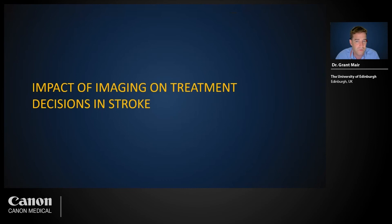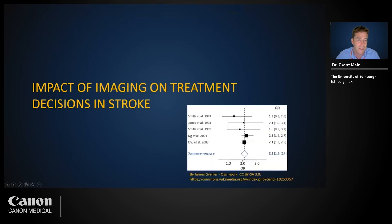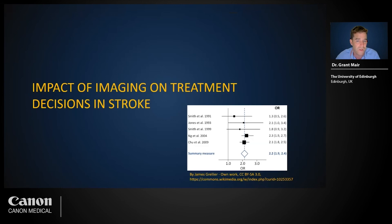Now we will consider the impact of imaging features on treatment decisions for stroke, using the best evidence from randomized controlled trials (RCTs). The next few slides include forest plots which combine and summarize data between different trials or subgroups to explore the impact of various imaging features on treatment effectiveness. Data points to the right of the vertical line support the use of a given treatment.